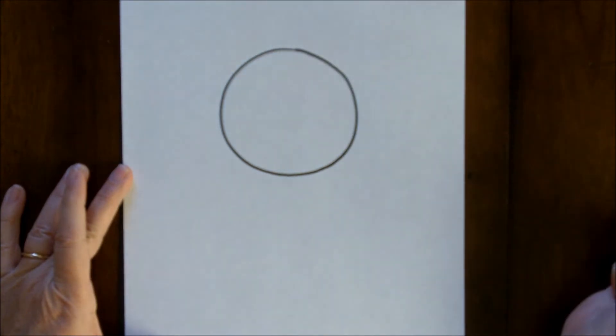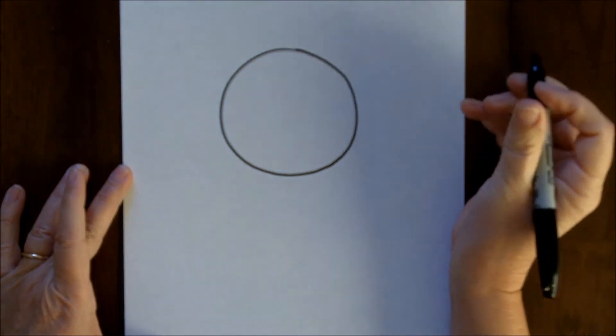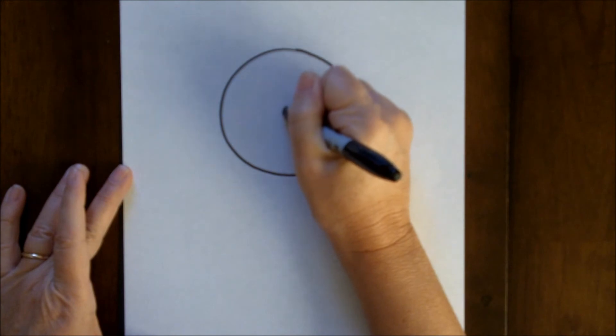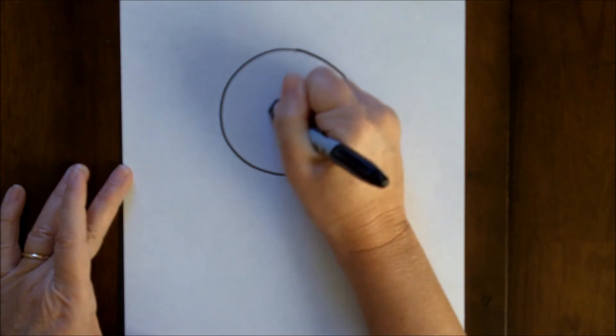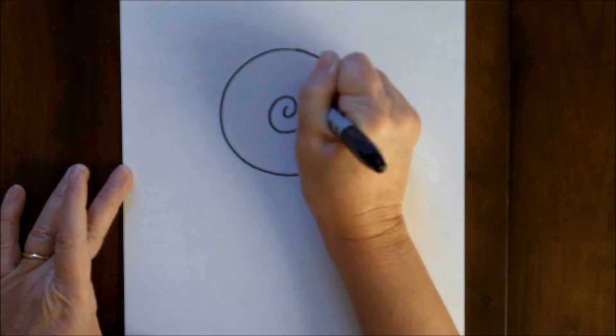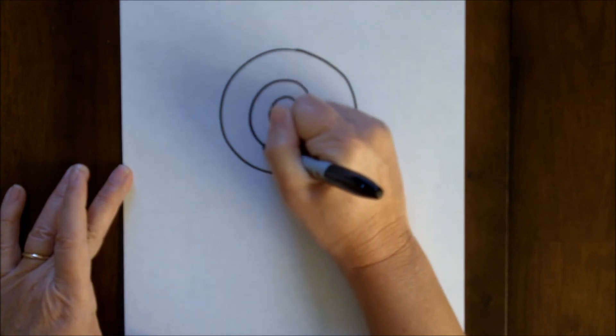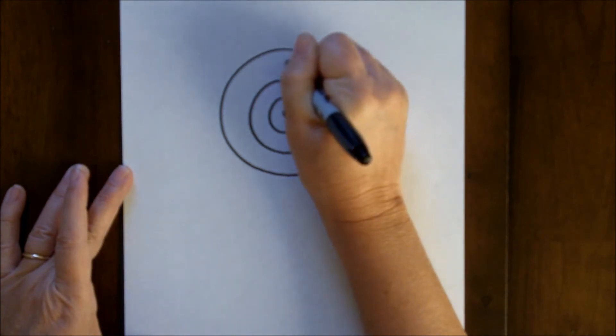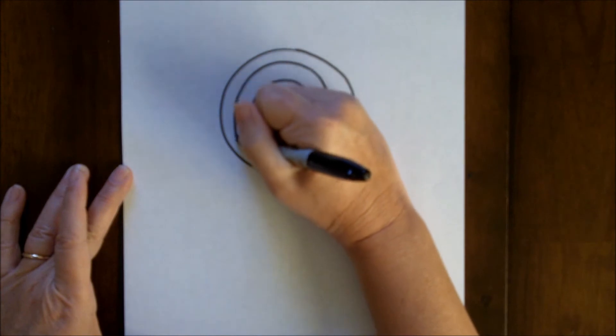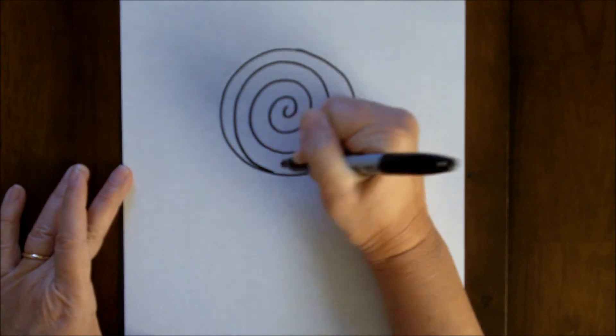It's pretty challenging making a circle; even I have trouble with that. Then from the center, we're going to make a spiral coming out of the center. Take your time with this, and we're going to keep going until it hits the edge of the circle.